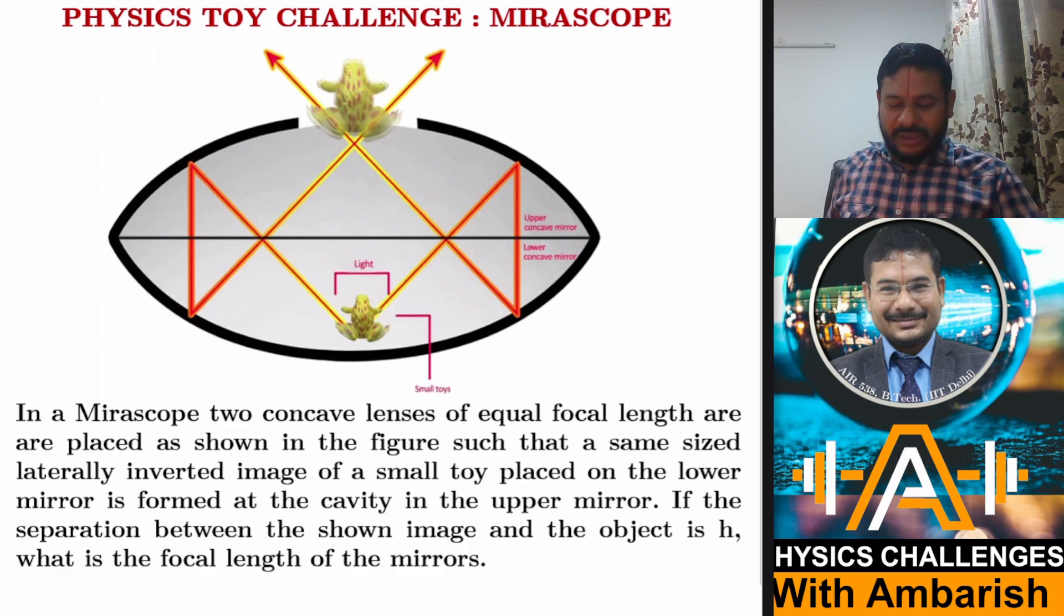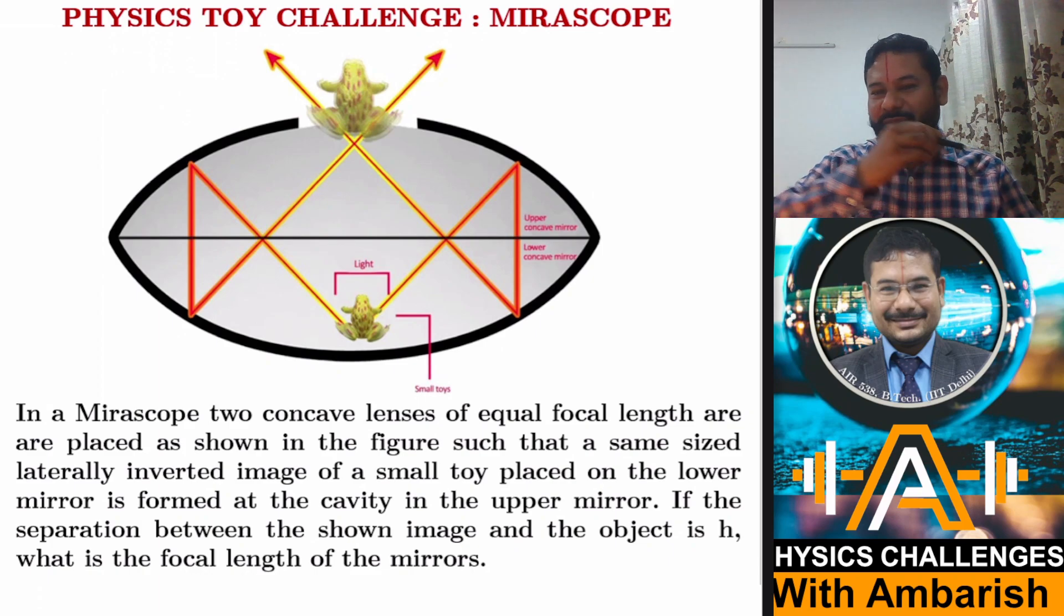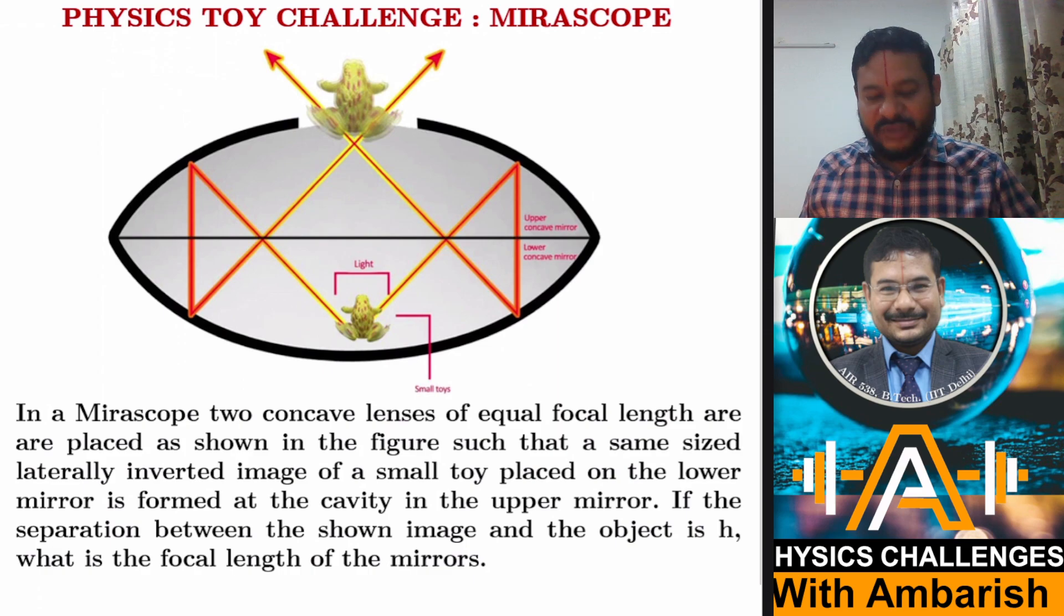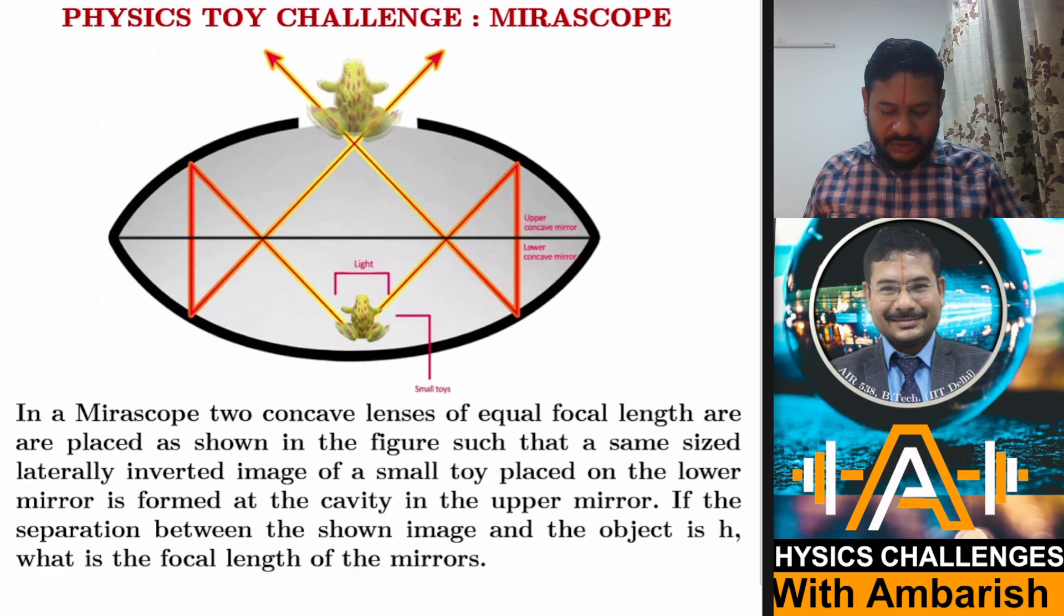So this vertical separation is given to be H and we have to tell what is the separation between the mirrors. This is H. So what is the focal length of each mirror given that mirrors are having identical focal lengths. And in fact, laterally inverted is not the proper word. In fact, it is radially inverted. That is every point is getting inverted by 180 degrees. So you can say radially inverted image is being formed. So that will be a better word to explain what's going on. It's a radially inverted image.